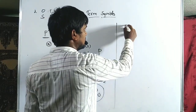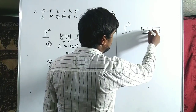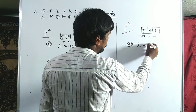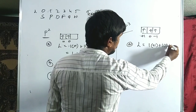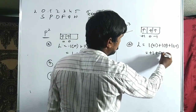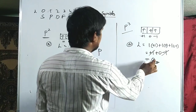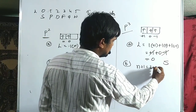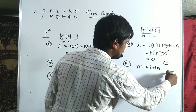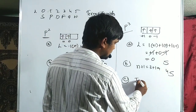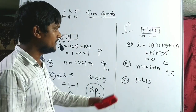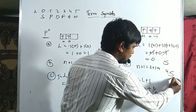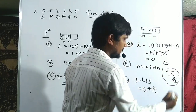For P3 configuration: three electrons with ML = +1, 0, −1 placed one each. L = (+1)+(0)+(−1) = 0, so the term is S. Multiplicity = 3+1 = 4. Since L=0 there's no distinction between L+S and L−S; S = 3/2. The ground term symbol for P3 is 4S(3/2).